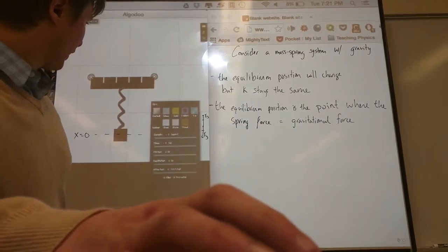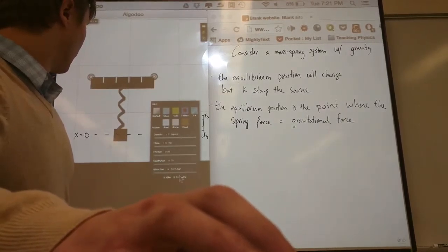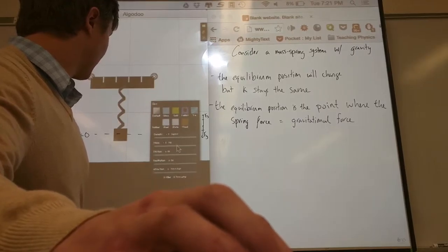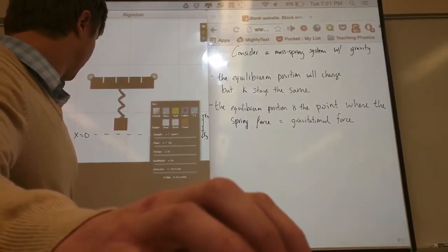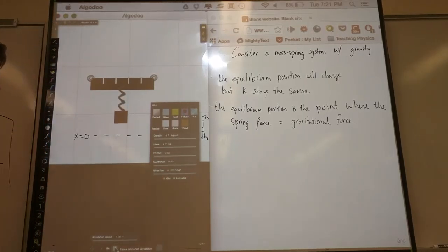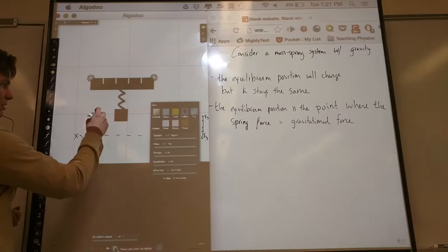Well, let's see what happens. It doesn't hang as low, right? So now the x equals 0 line is up here.